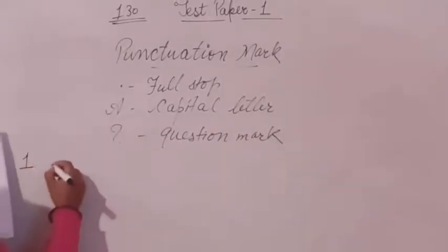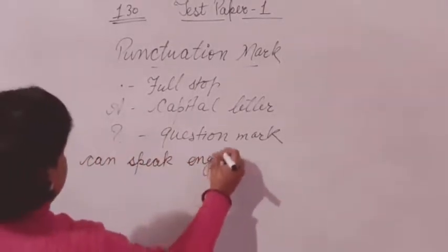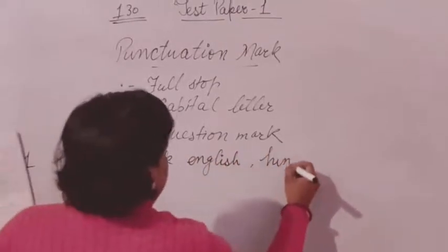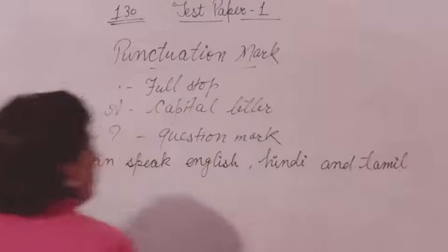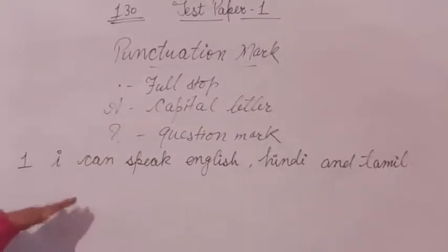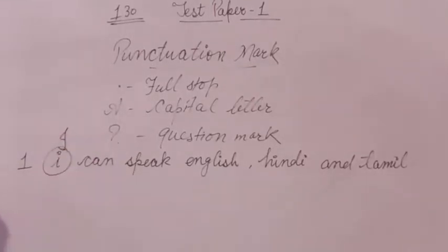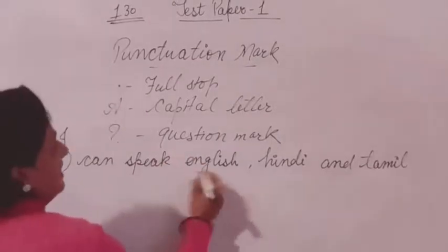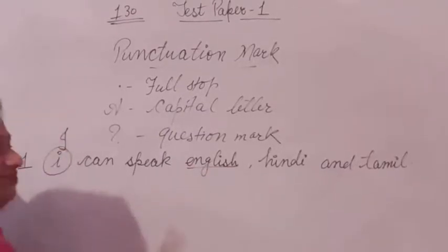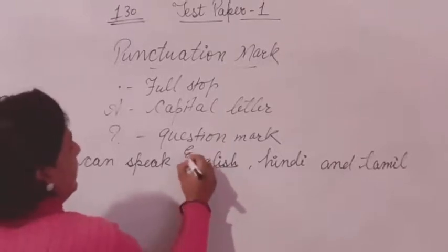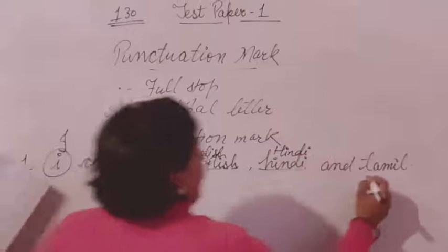Let's begin. The first example is: 'I can speak English, Hindi and Tamil.' We will remove all errors and write it with the correct punctuation marks. The first letter should be capital. We write 'I can speak.' English is the name of a subject, so we write it with a capital letter. Similarly, Hindi and Tamil are also written with capital letters because they are languages.